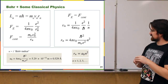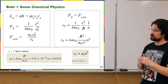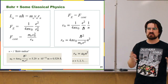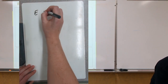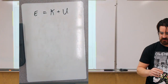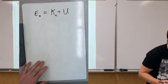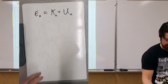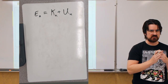Now we have equations for the velocity and radius of any orbit as a function of the quantum number n. We can think about the energy associated with any of these states. The energy of the nth orbit is the kinetic energy plus the potential energy. Since we're thinking about quantized states, both the kinetic and potential energies are quantized. The potential energy here is the electric potential energy between the proton and the electron.